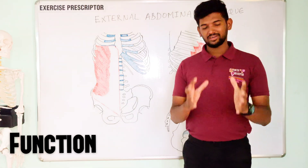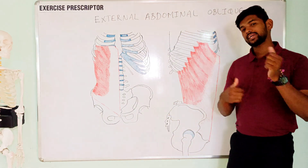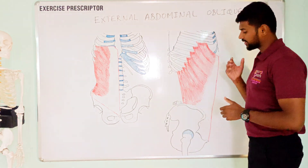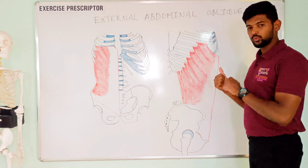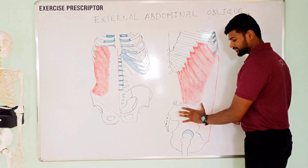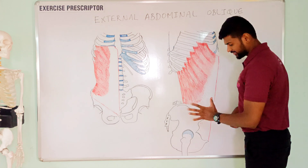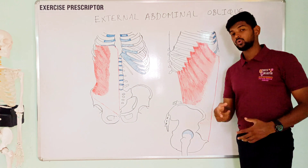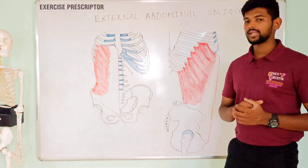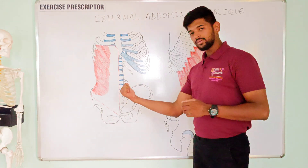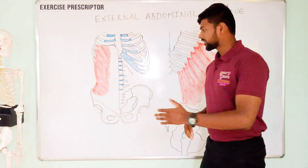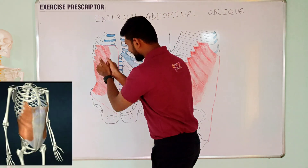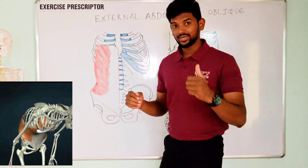Next, we are going to understand the functions or movements of the external abdominal oblique. I will classify the movement into standard mover action and reverse mover action. Standard mover action is when the origin — the distal, less mobile attachment — is fixed, and the insertion moves toward the origin. Looking at the anterior view, the fibers run in a somewhat vertical manner, so if you pull these fibers, it produces flexion of the trunk.